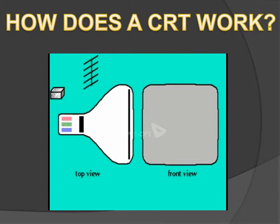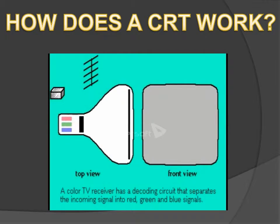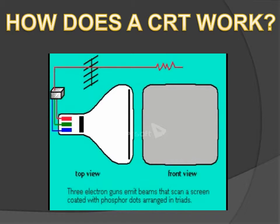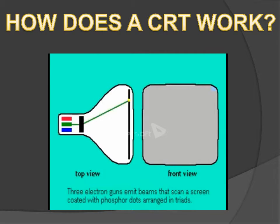How does a CRT work? A TV image is made up of hundreds of lines that are in turn made up of hundreds of dots. When a color television receives video, it decodes a signal into three separate signals, one for each of the primary colors: red, green, and blue. The colors you see on your television are created by adding various levels of these colors. Inside the TV tube, there are three electron guns, one for each color.